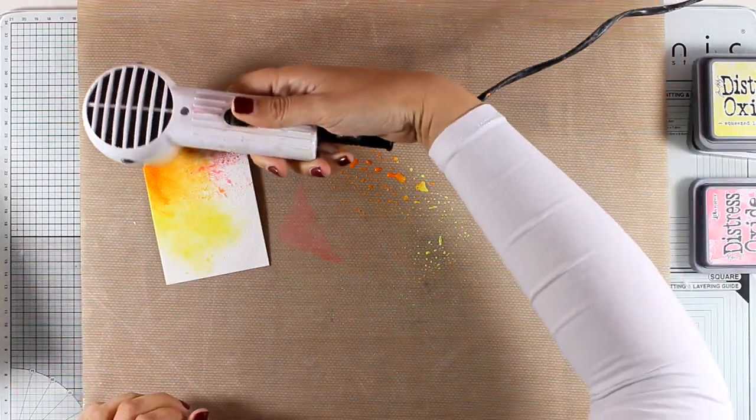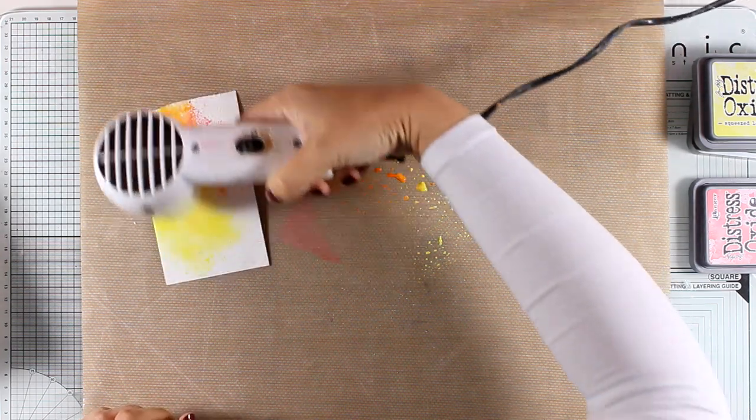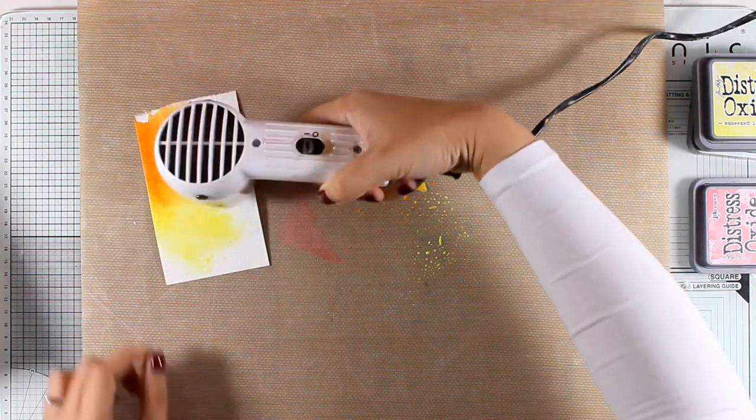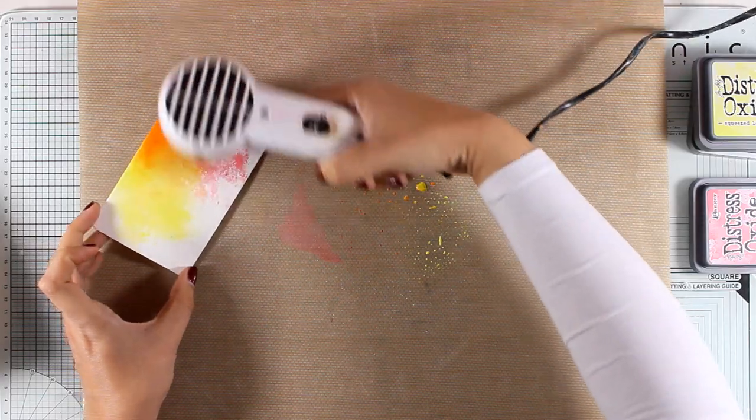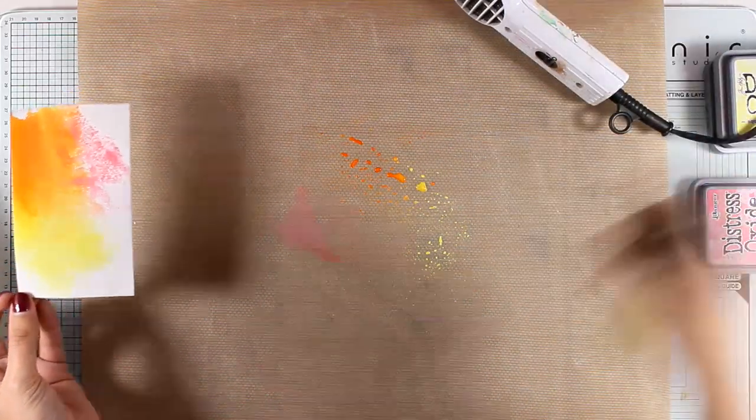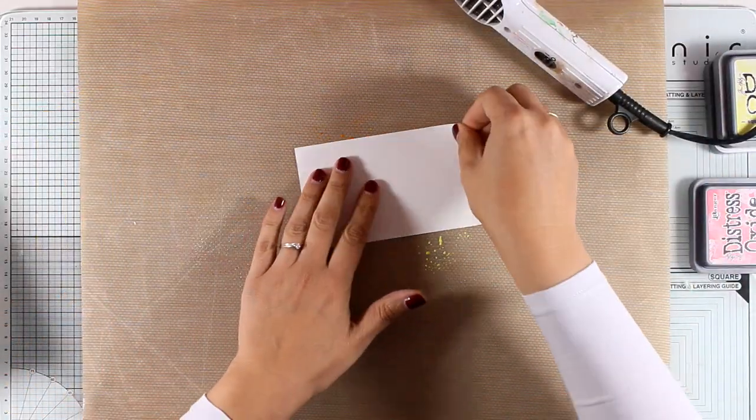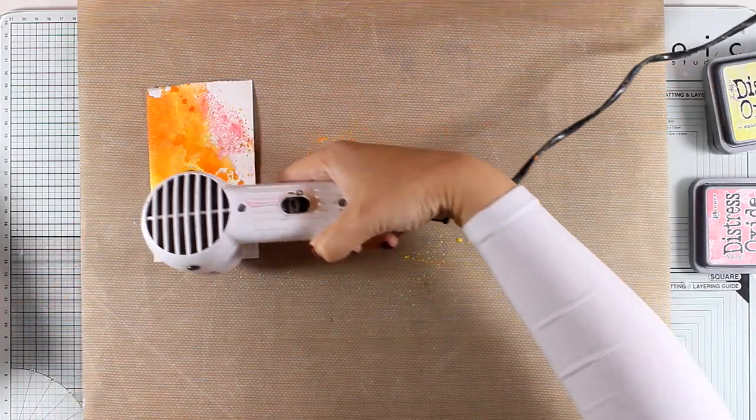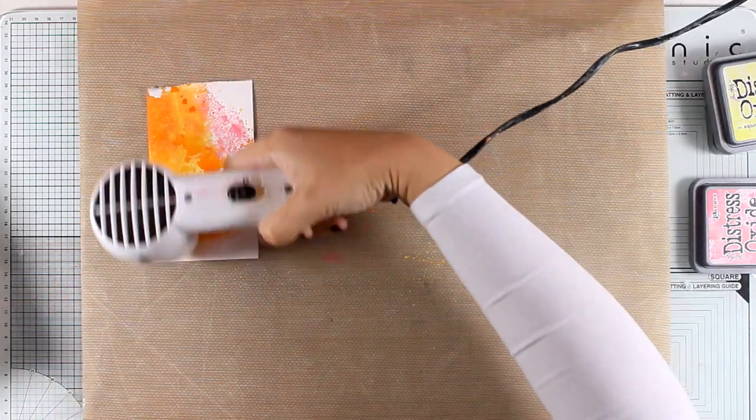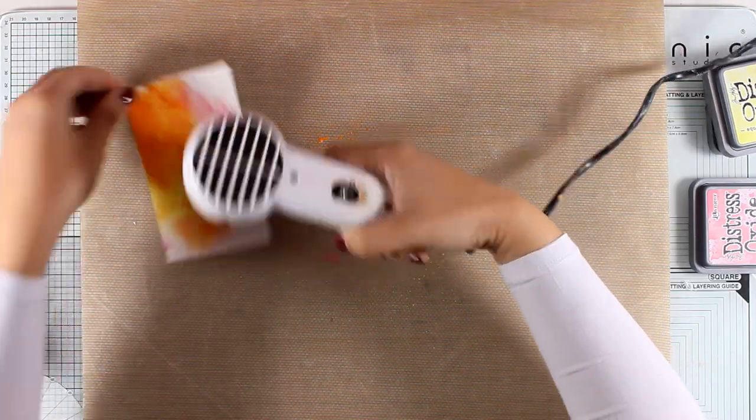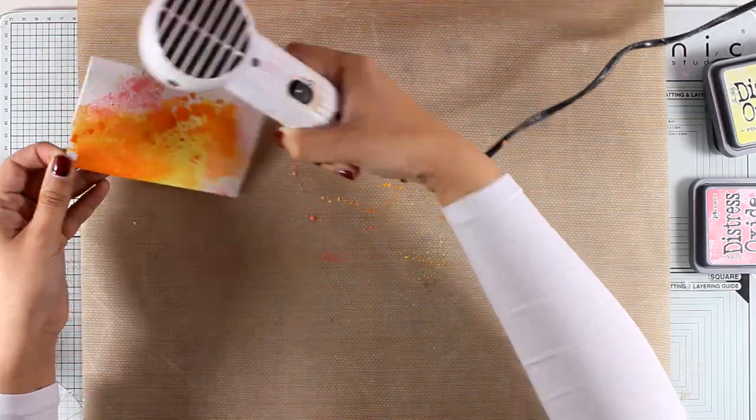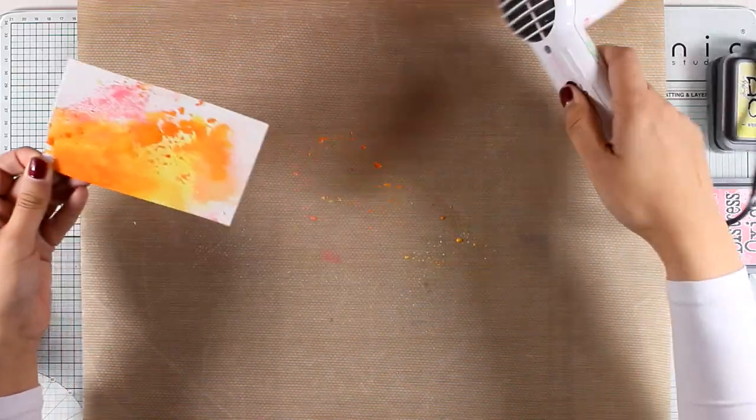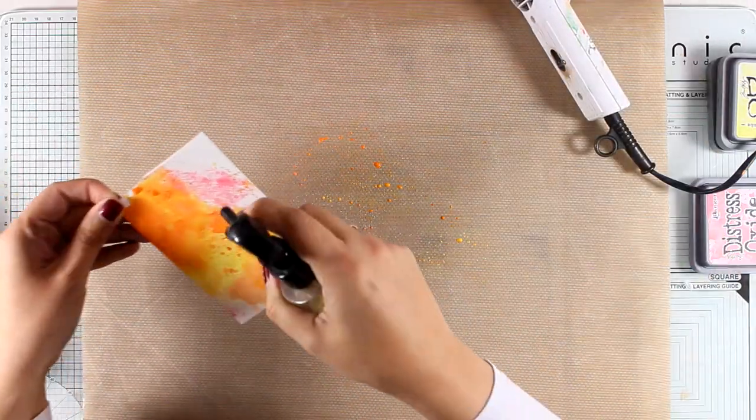I'm working with my distress oxide inks with the famous technique where you just apply a little bit of ink on your craft mat and then you spray with water. All you do is just smooth the paper on top. Always remember that in between layers make sure that everything is dry, otherwise all you will be able to create is mud.